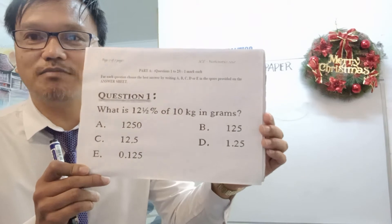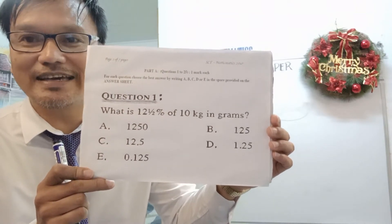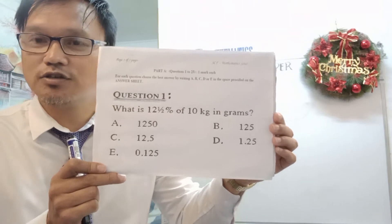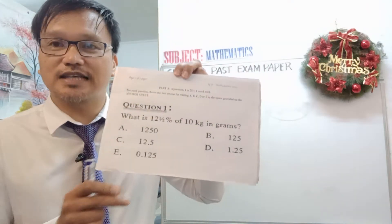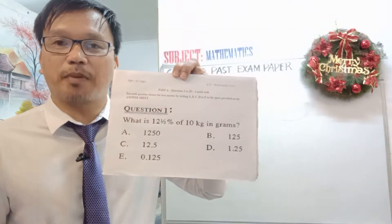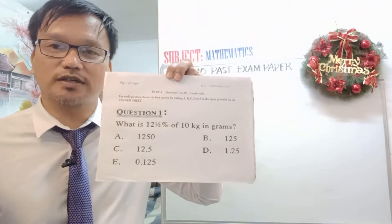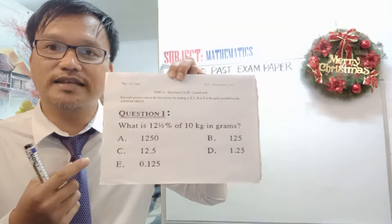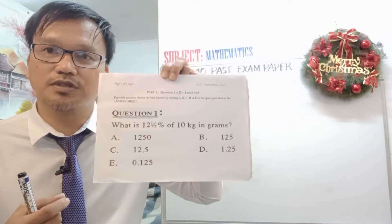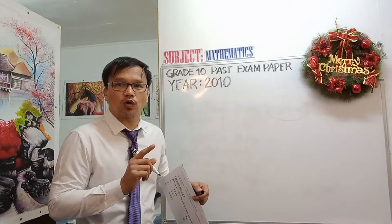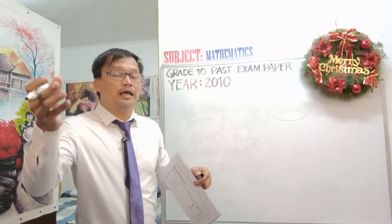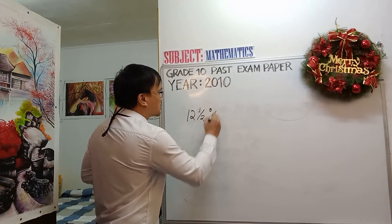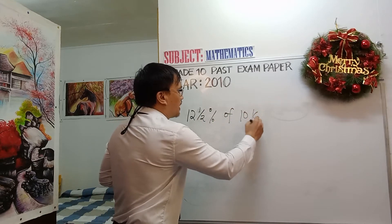Question number one: what is 12 and one half percent of 10 kilograms in grams? For the Grade 10 national examination, there are three parts: Part A is multiple choice, Part B is short answer, and Part C is extended response. We start with Part A, multiple choice. Question one is: what is 12 and one half percent of 10 kilograms in grams? You must always secure the correct answer by showing your working out.